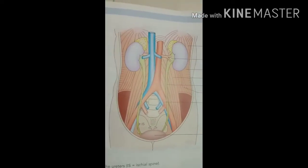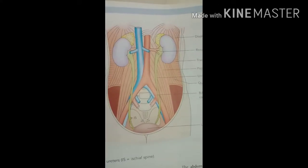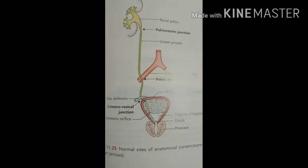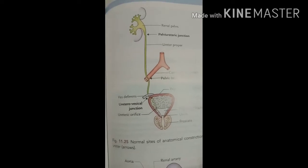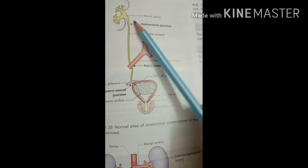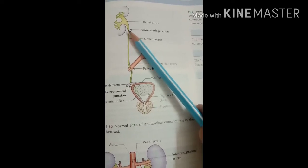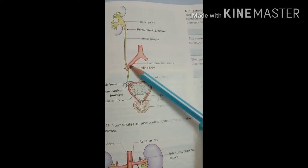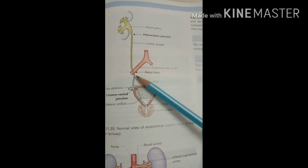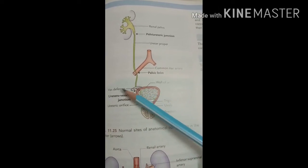Clinically, these narrowing parts are very important because renal calculi — kidney stones — tend to lodge at the narrow parts of the ureter. The first constriction site is the pelvi-ureteric junction, which is at the lower pole of the kidney where the ureter actually begins. The second constriction is at the pelvic brim, where the ureter enters the pelvis.